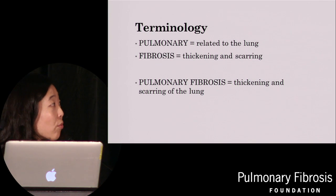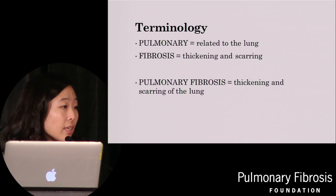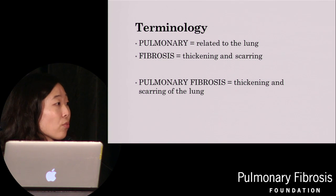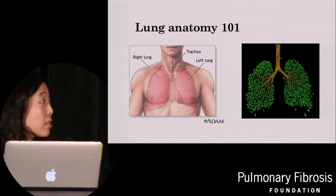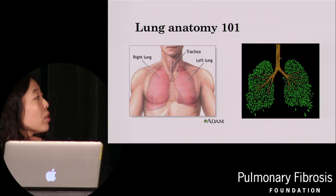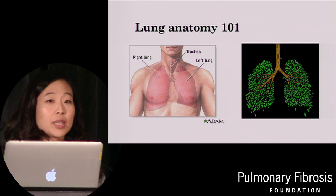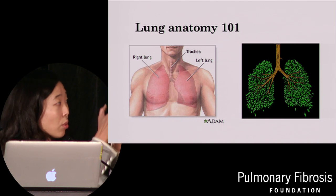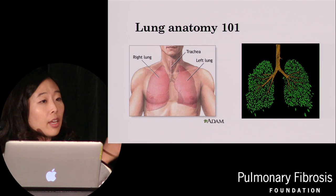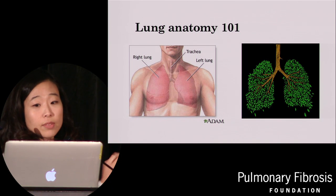Getting back to why we refer to it as pulmonary fibrosis: pulmonary means related to the lung, and fibrosis means thickening and scarring. So pulmonary fibrosis refers to thickening and scarring of the lung. Here is a depiction of lung anatomy — you can see the trachea, which is the windpipe, the right lung, and the left lung. When I explain lung anatomy to my patients, I basically describe it as an upside-down tree. You have the major trunk going to the right and left, and all the branches keep dividing until they reach the very end where the leaves are.